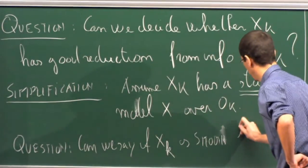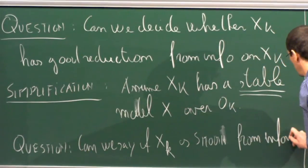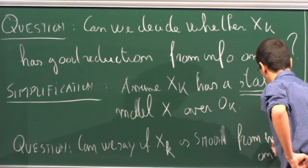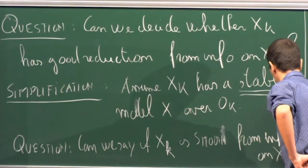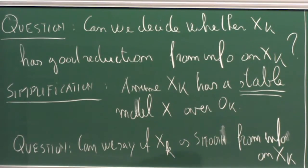Stable is as in the Deligne-Mumford sense: every irreducible rational component meets the other components in at least three points. So, can we decide this?